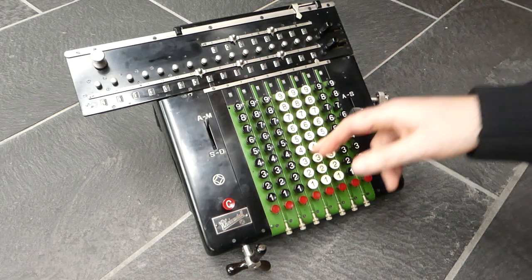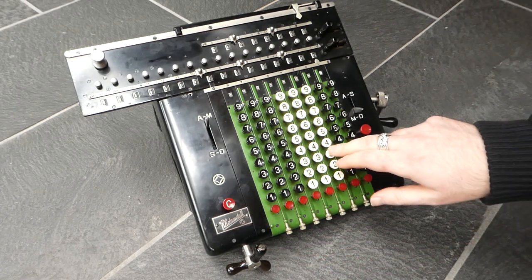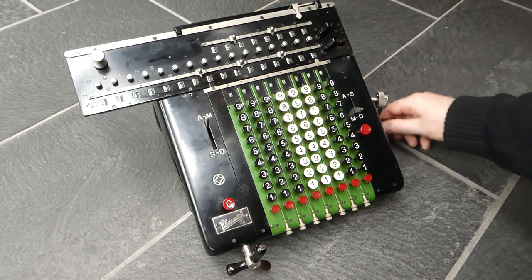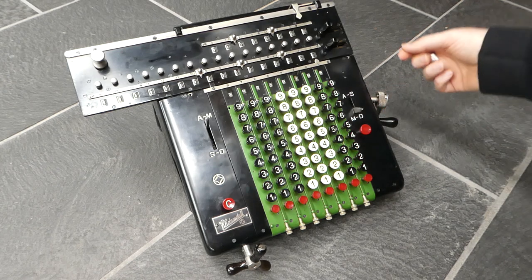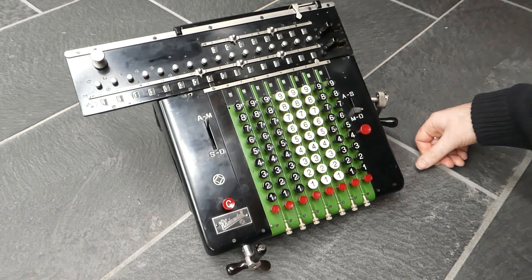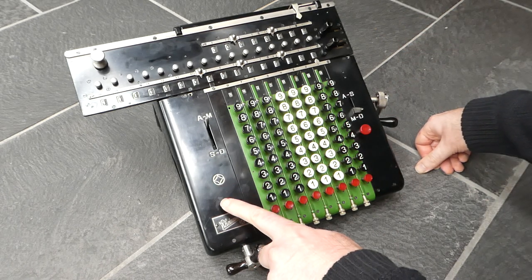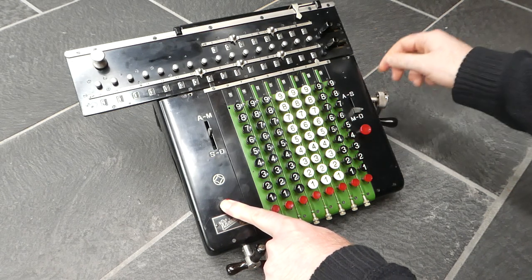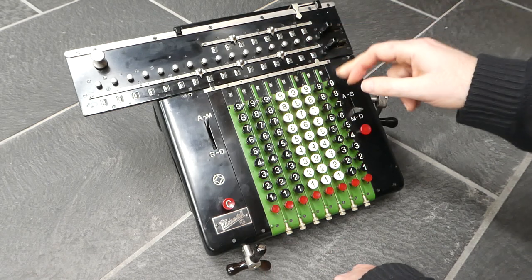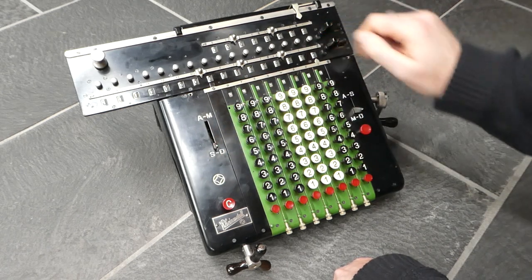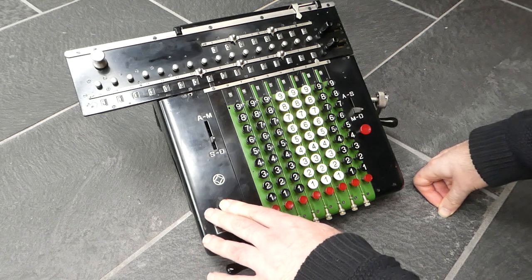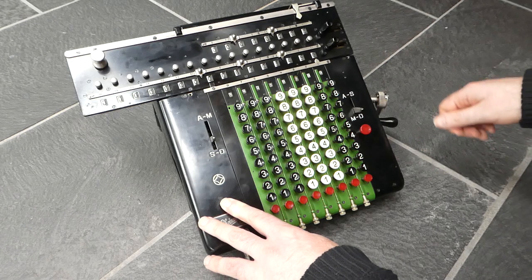You may have noticed this C button here, which is interesting. Normally when you add or subtract the counter is incremented. But if you accidentally turn the crank once too often, you can correct that by holding down the C button and turning it again. Then it subtracts and reduces the counter. If you were to fully subtract it would actually increase the counter. So holding down this C correction button, it actually reverses fully the last turn of the crank.